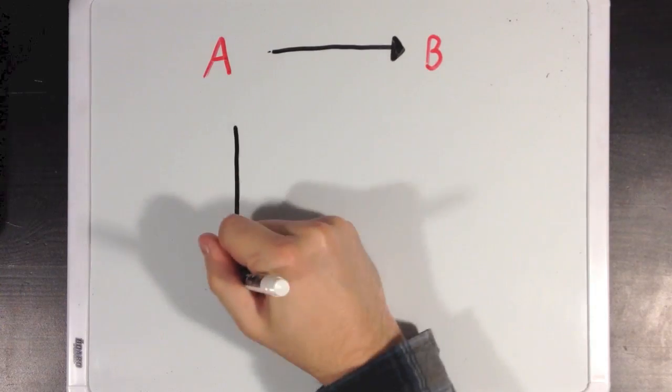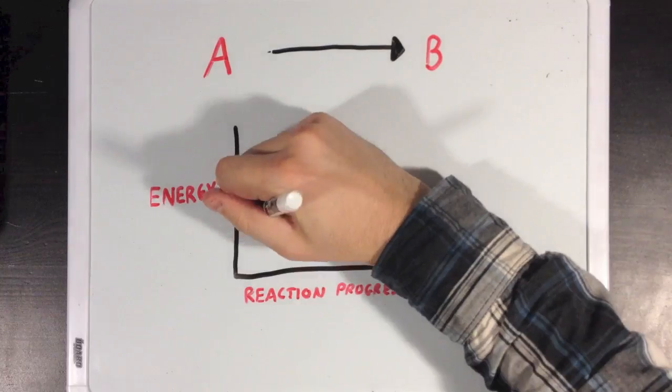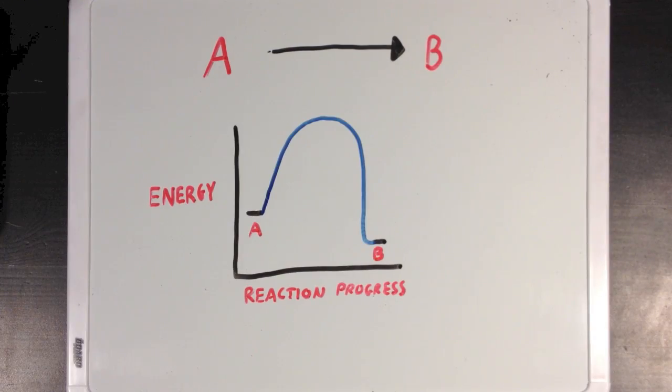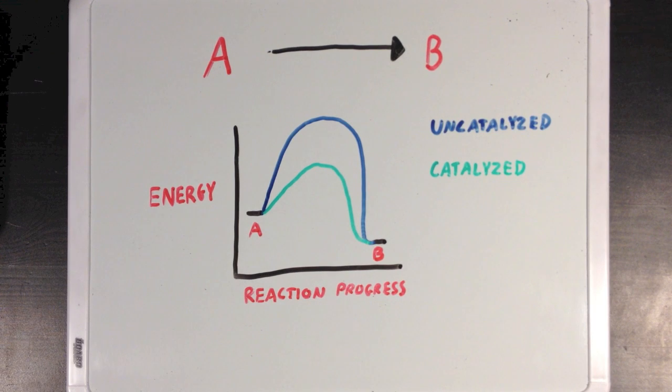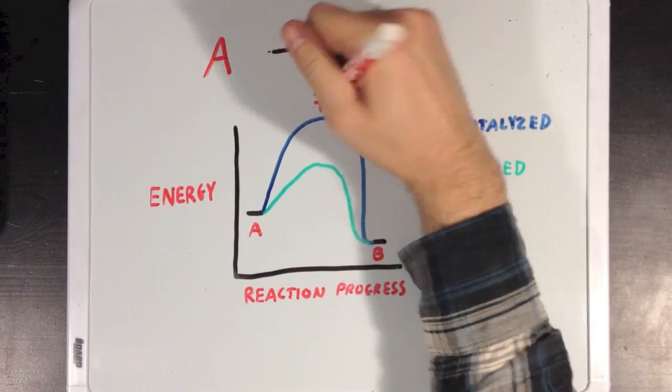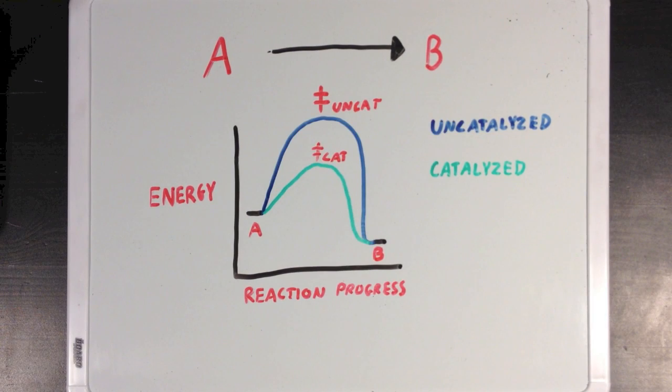So let's go back to our example from before with our reaction coordinate diagram. But now, let's say that the reaction has a catalyst. So with the catalyst, the activation energy barrier that molecule A has to overcome in order to get to point B is much smaller. And this will mean that your reaction will have a transition state with a much lower energy, meaning that it's more stable with the enzyme, and also that the reaction as a whole will have a much lower activation energy.